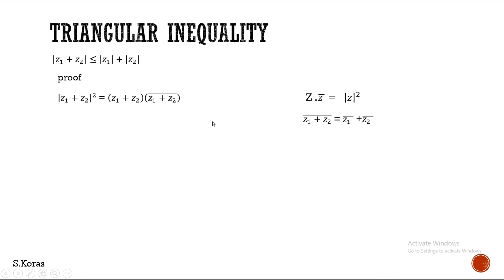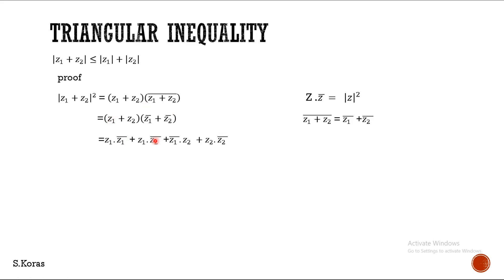So, we can split like that. This will become Z1 plus Z2 into Z1 bar plus Z2 bar. Now, let us try to multiply this. That is: Z1 into Z1 bar, Z1 into Z2 bar, Z2 into Z1 bar, Z2 into Z2 bar. So, these two complex numbers are multiplied as below.